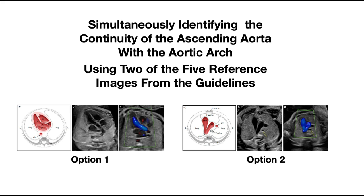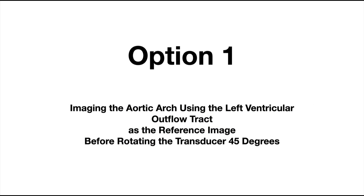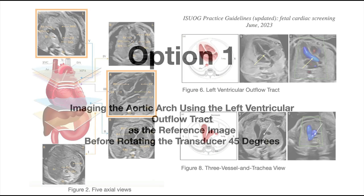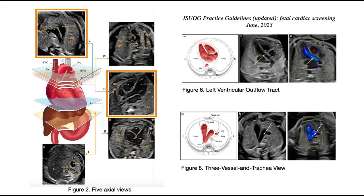Simultaneously identifying the continuity of the ascending aorta with the aortic arch using two of the five reference images from the guidelines. Option 1: imaging the aortic arch using the left ventricular outflow tract as the reference image before rotating the transducer 45 degrees. These are images from the ISUOG guidelines. Figure 2 illustrates the five suggested image planes for the screening examination. The five images do not include imaging the continuity between the ascending aorta and the transverse aortic arch, but only images the left outflow tract as it exits the left ventricle, as illustrated by the yellow arrows in Figure 6, and the transverse aortic arch at the level of the three-vessel and trachea view, as illustrated by the white arrows in Figure 8.